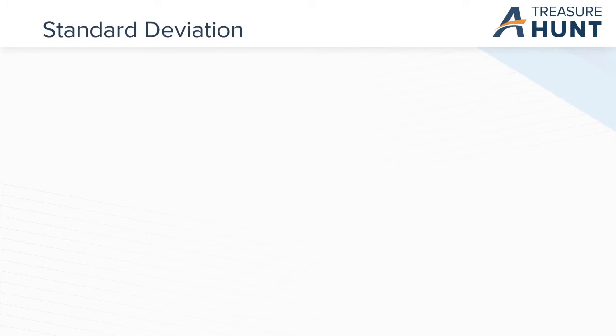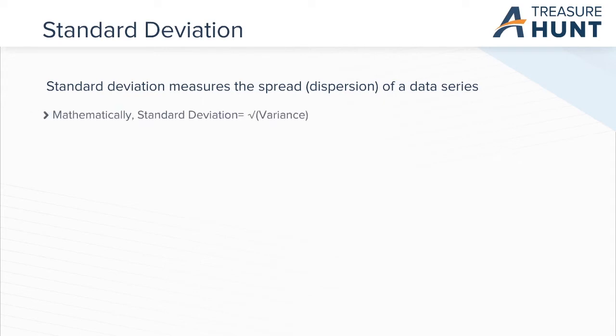Now we will talk about standard deviation. Standard deviation measures the spread or dispersion of a data series. It is simply the square root of variance. It has the same units as the original data. We will understand standard deviation with an example while completing the simulation, learning how to compute univariate basic numeric descriptive statistics.